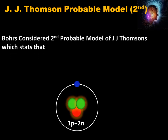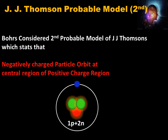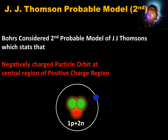There was a scientist named Bohr who was a colleague of J.J. Thomson. Bohr considered the second probable model proposed by J.J. Thomson, which states that negatively charged particles orbit at the central region of a positively charged region. On the basis of this model, Bohr presented his own model of the atom, called the Bohr model. According to this model, electrons revolve around the positively charged nucleus.